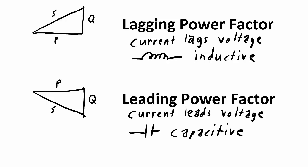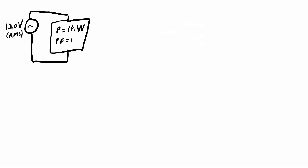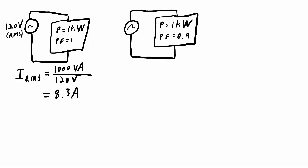Power factor is important because it indicates how much current must flow to provide a given amount of power to a load. In a first example, a circuit consumes 1 kilowatt of real power from a 120-volt RMS source with a power factor of 1. Since apparent power equals real power at PF=1, the RMS current is 1000 VA divided by 120 volts, which is 8.3 amps.